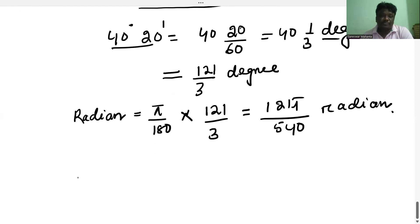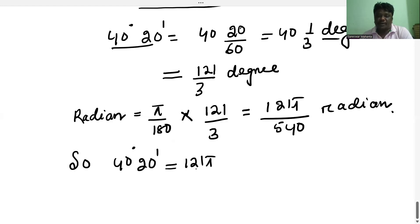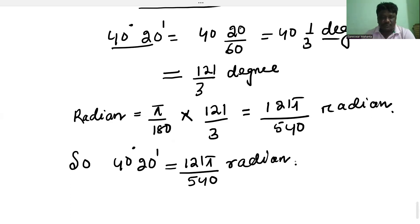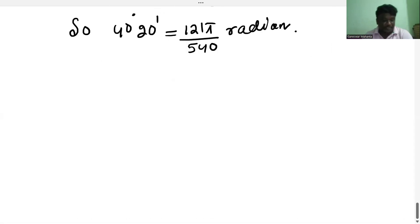So finally, 40 degrees 20 minutes is converted into 121 pi divided by 540 radian. That is your answer. So you can see how to convert degree measure into radian measure. Now I will discuss another example: Convert 6 radians into degree measurement.